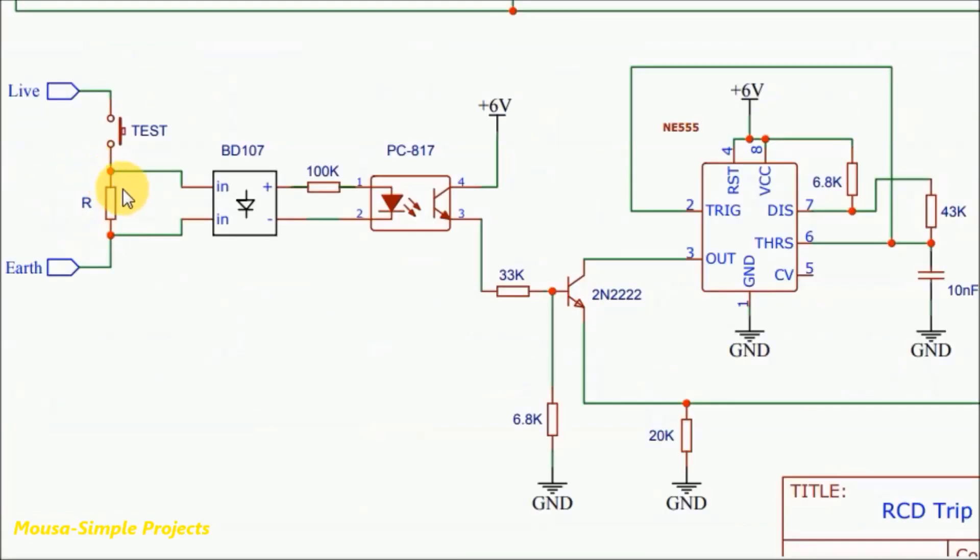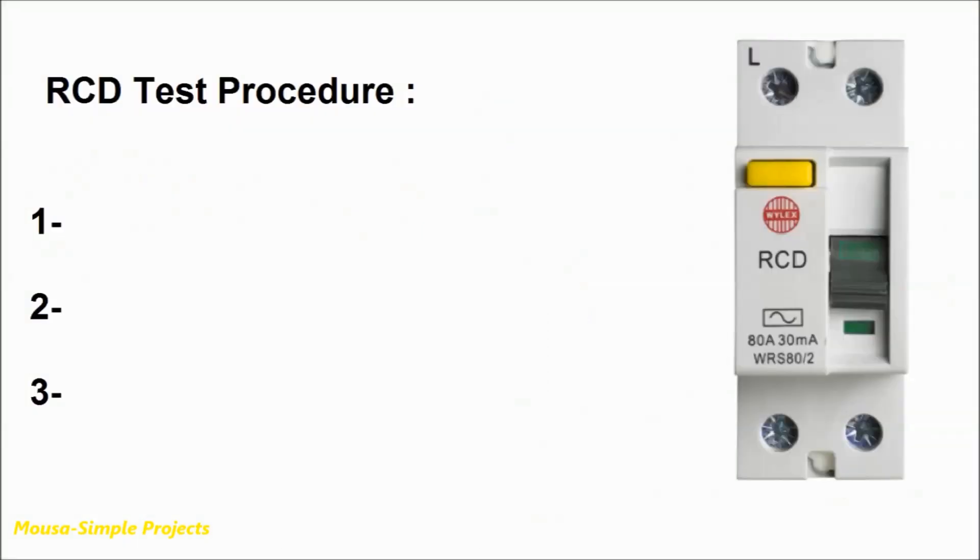The value of this resistor depends on how much leakage current you need for your test. In the RCD test procedure, we usually use three different leakage currents.